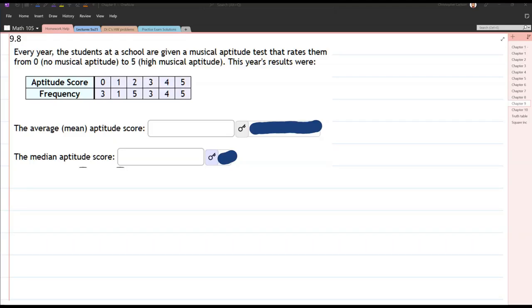We would like to take this frequency table, get a mean or an average, and then get a median, which would be the middle score.